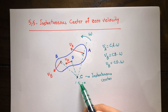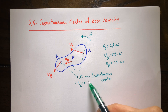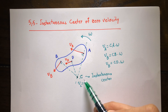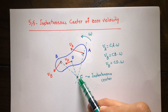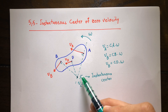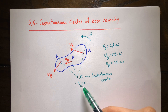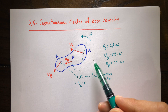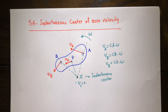In some problems it is quite easy to find the instantaneous center, so it's better to use this method to find it and use it to analyze velocities. But in some problems it's quite difficult to find the instantaneous center, so it's not going to be handy in those cases — it's better to use the relative velocity equations between different points of the rigid body.